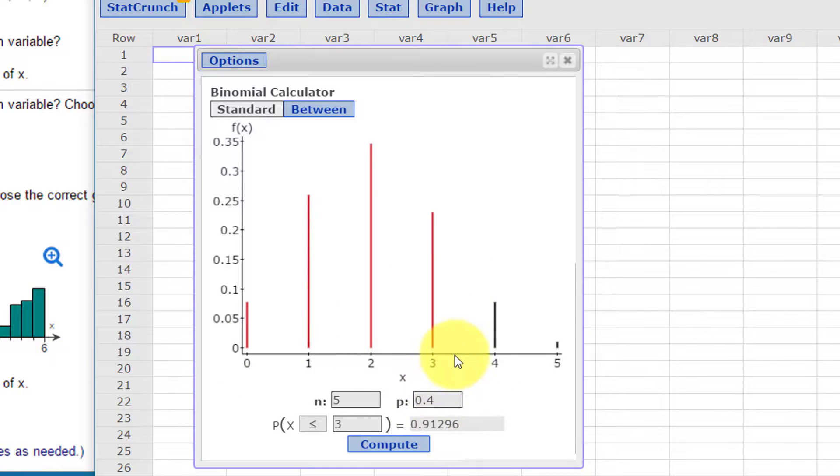91% probability it'll be 3 or less with an n of 5 and a p of 0.4. And what is the probability of greater than 3 is 0.08, which would be obviously 1 minus less than 3. So remember that we can use the calculator that way.